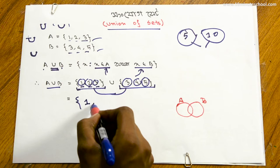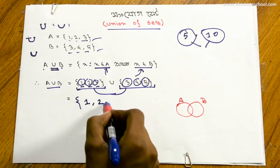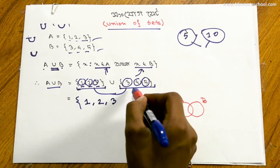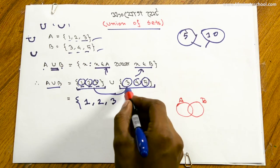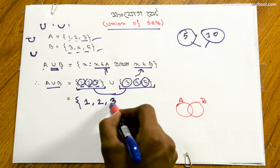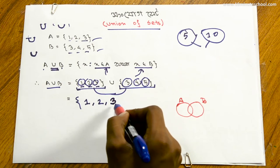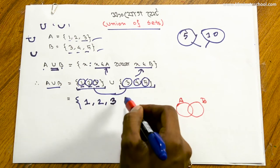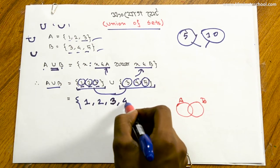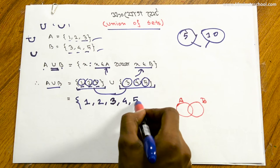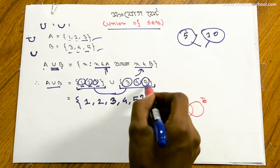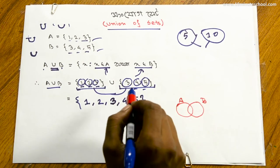A set = {1, 2, 3} અને B set = {3, 4, 5}. A union B ને નોટ કરીએ — 1, 2, 3, 4, 5 — આ ઉપાદાન (elements) એ.ની.